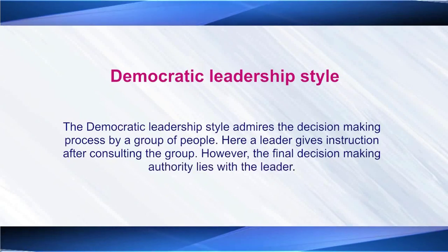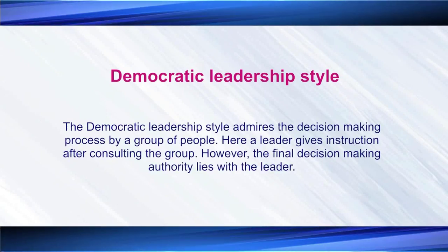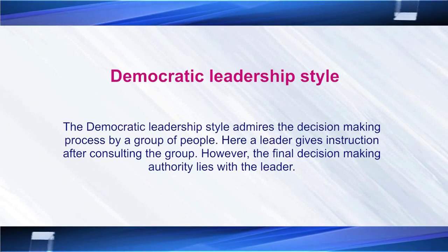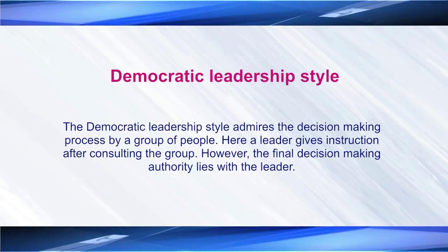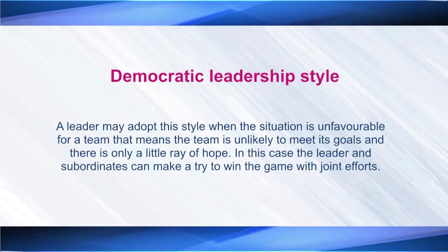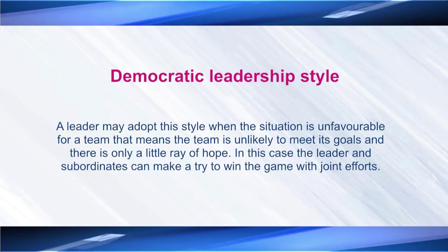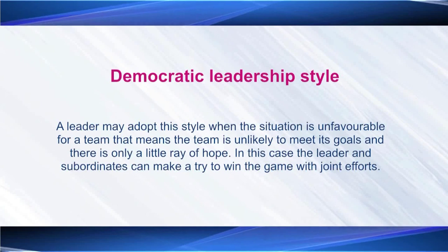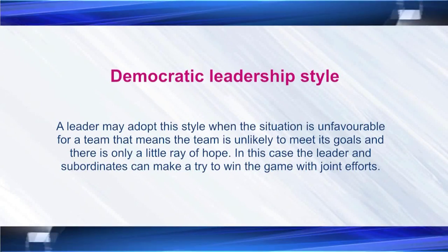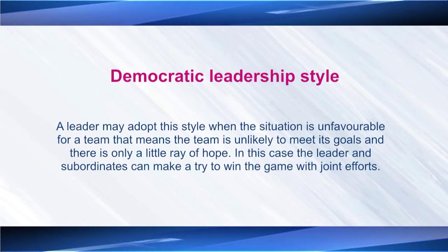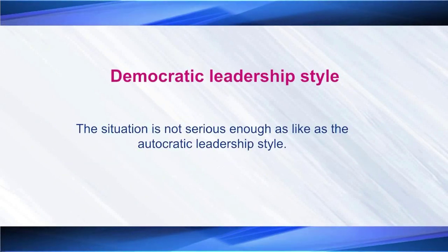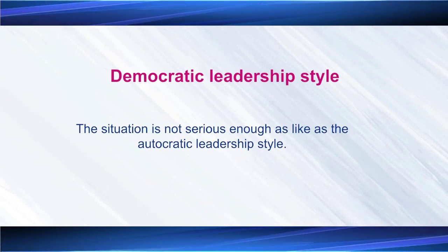The second type of leadership style is democratic leadership. Democratic leadership admires the decision-making process by a group of people. A leader gives instruction after consulting the group; however, the final decision-making authority lies with the leader. A leader may adopt this style when the situation is unfavorable for a team and the team is unlikely to meet its goals with only a little ray of hope. In this case, the leader and subordinates make a joint effort to win. The situation is not as serious as in autocratic leadership.